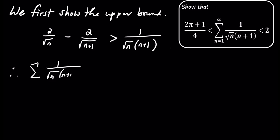Thus, the sum of 1 over the square root of n times n plus 1 is bounded above by a telescoping series.